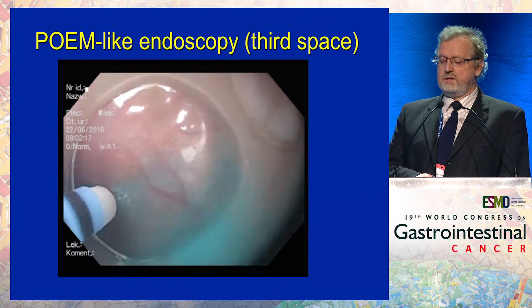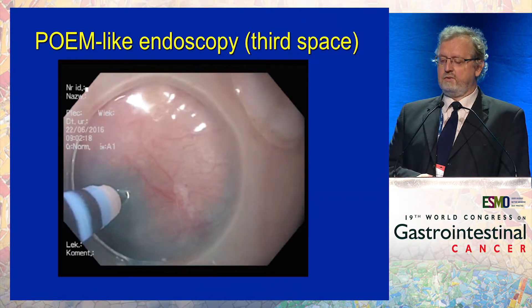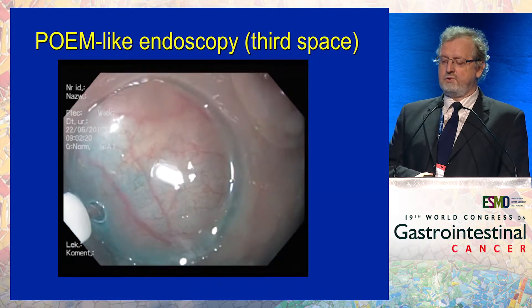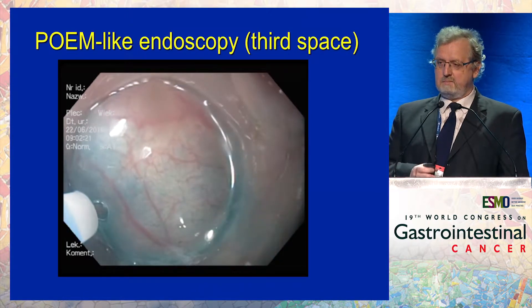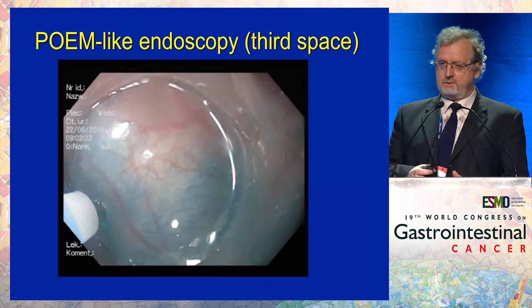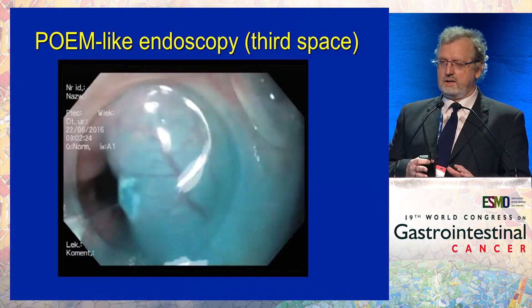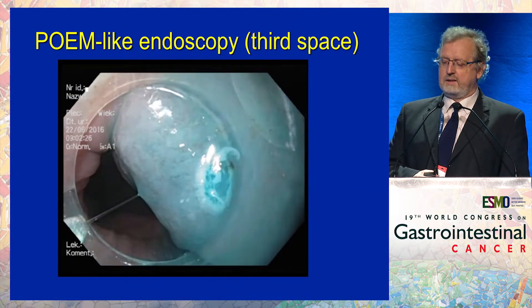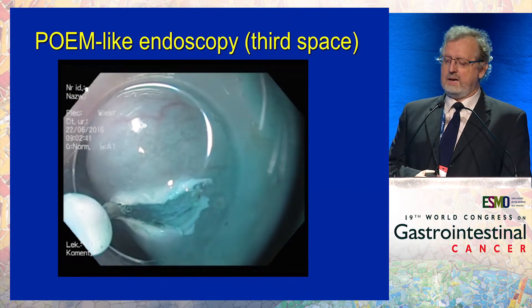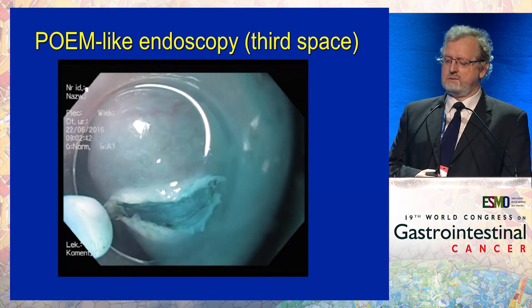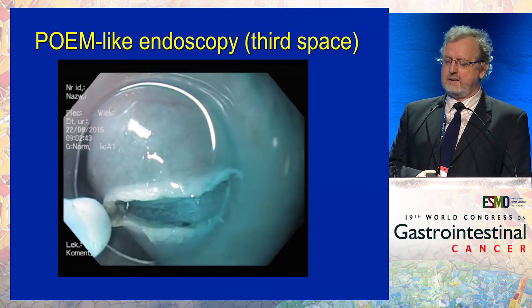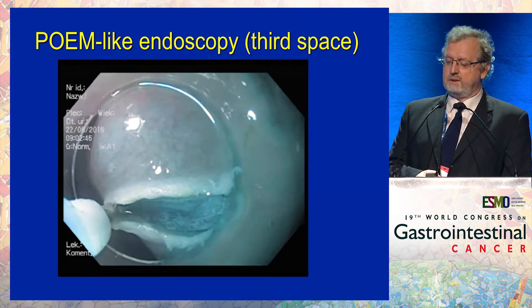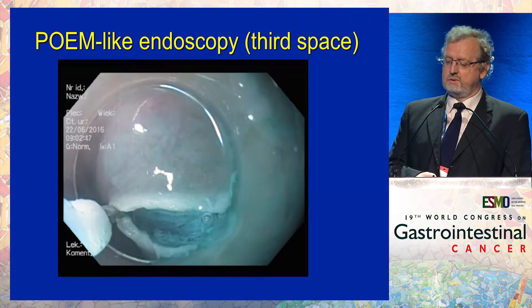We first inject a lot of fluid to make the third space between the submucosa and the muscle layer larger and larger. Then we enter this space by cutting the mucosa in the middle part of the esophagus.